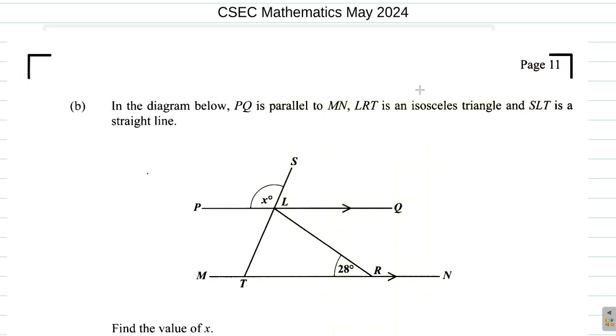What it says here, in the diagram below, PQ, that's this, PQ is parallel to MN. Okay, you can see the two arrows here, showing that they are parallel.